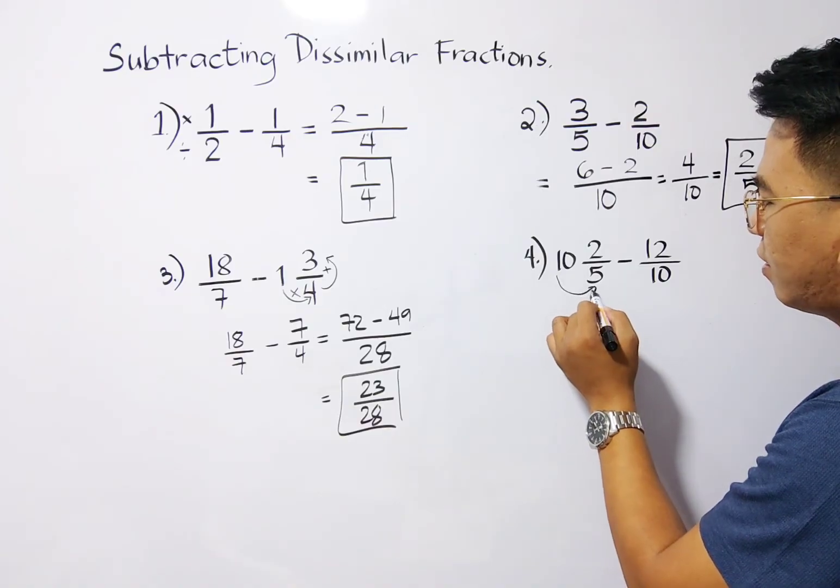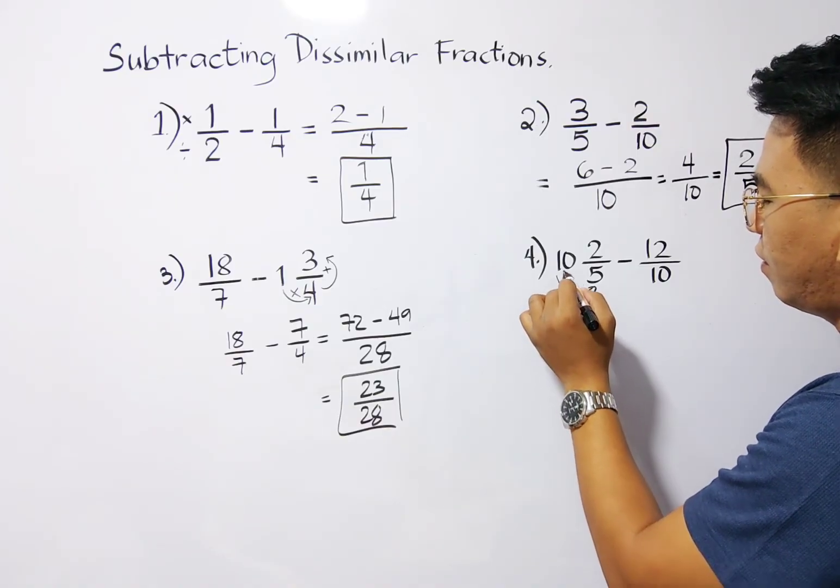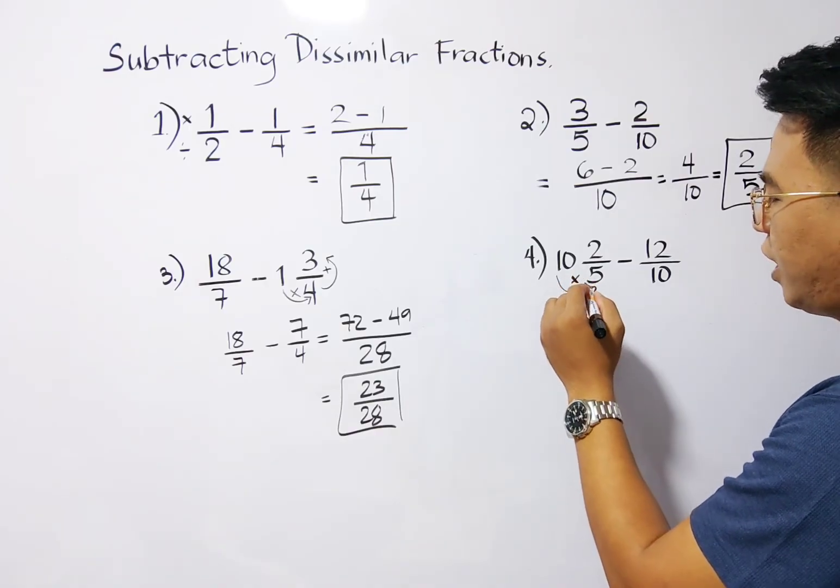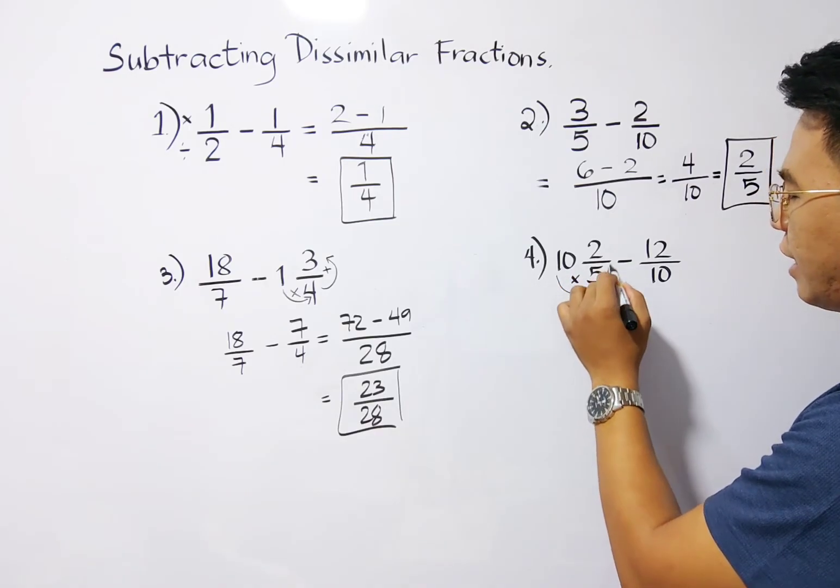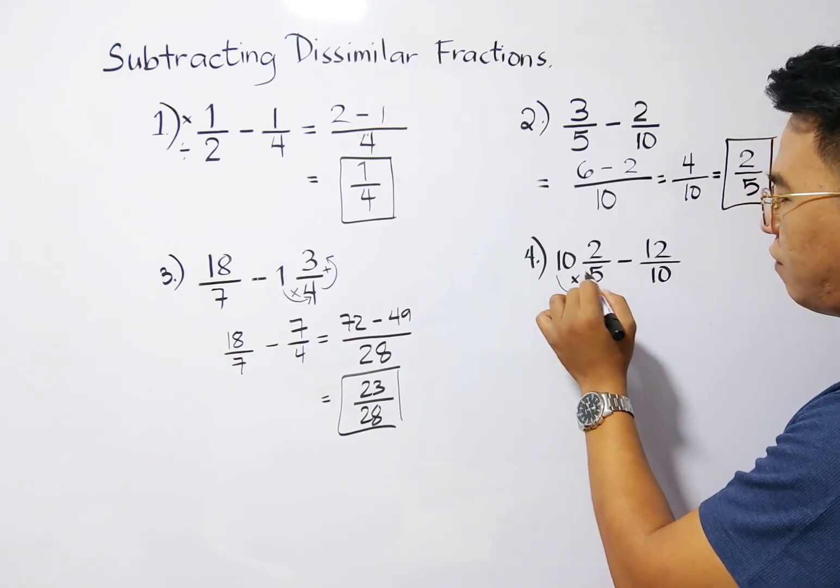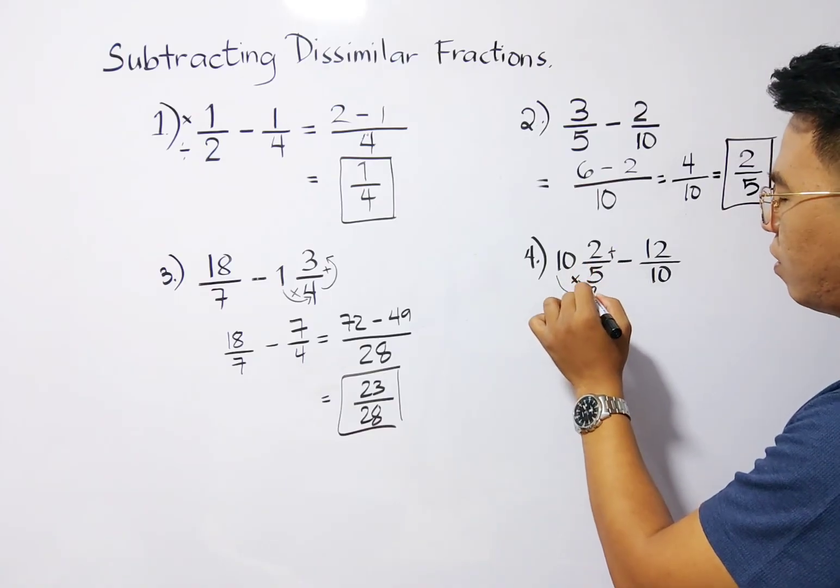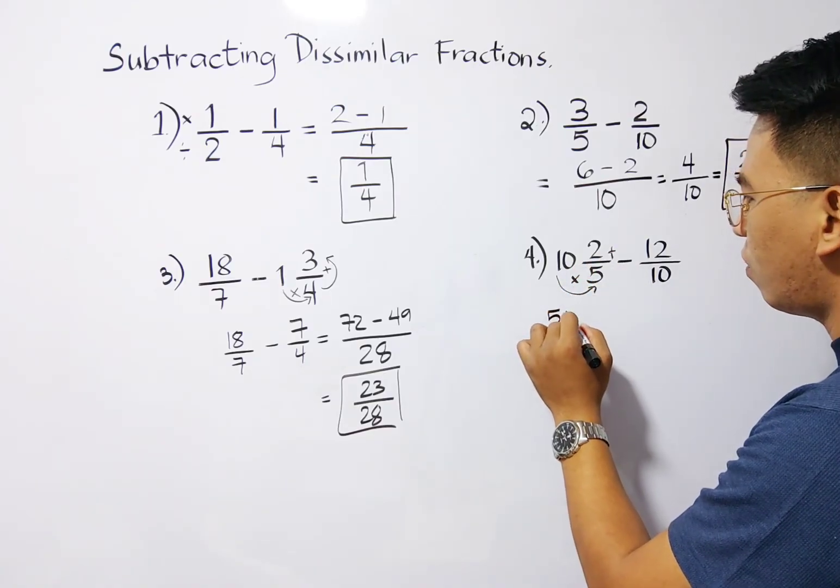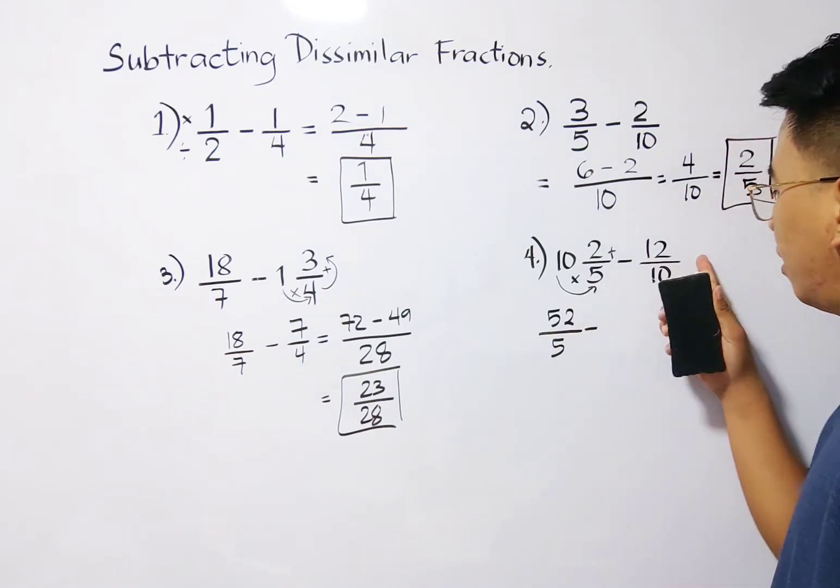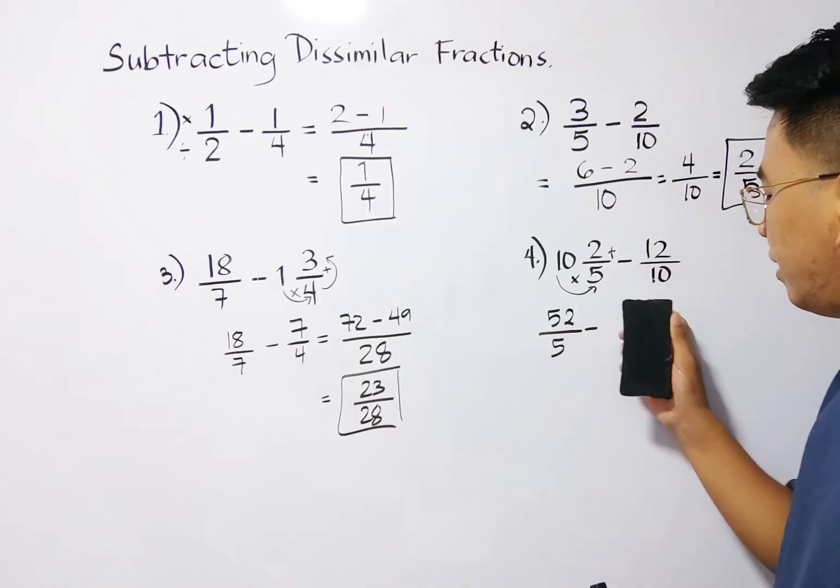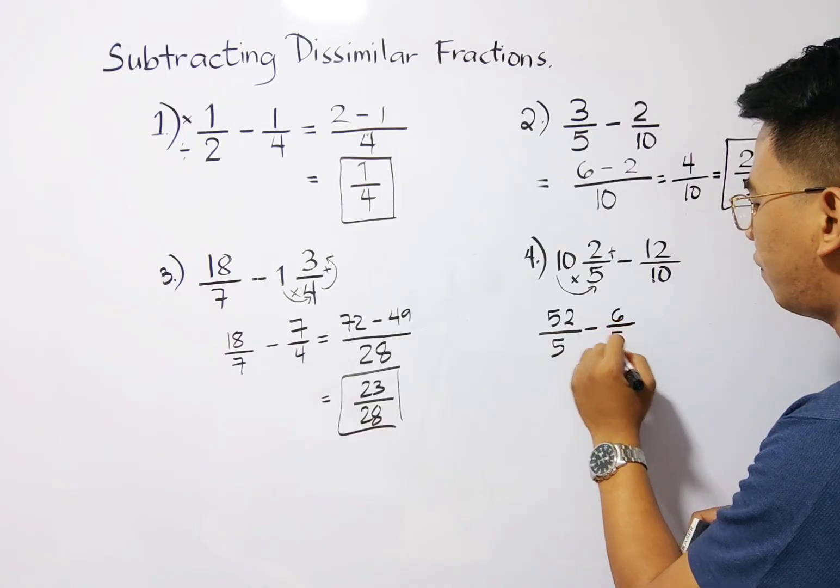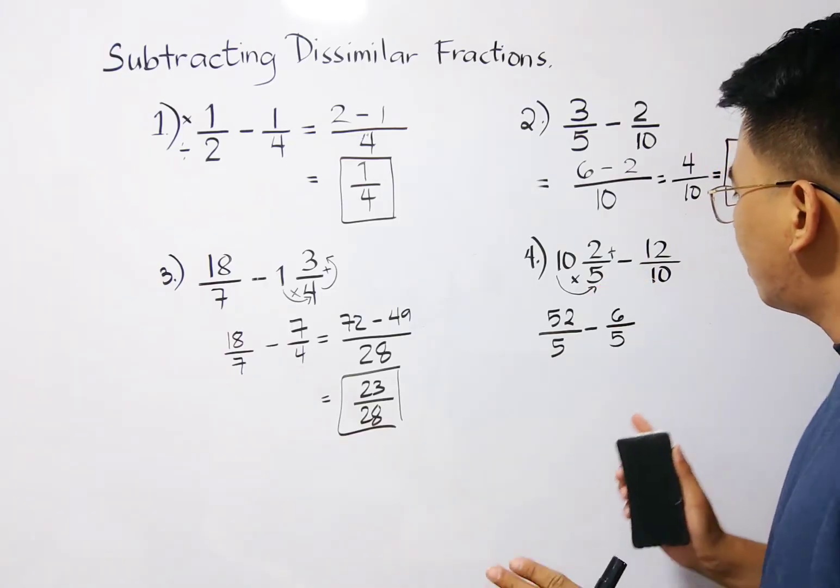So we will multiply this. 5 times, 10 times 5, which is 50. 10 times 5 is 50 plus 2. So it would give us 52 over 5 minus, this one, instead of using 12 over 10, we know that we can simplify this into 6 over 5.